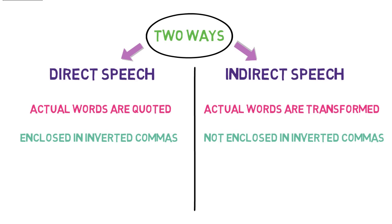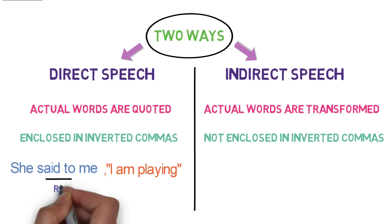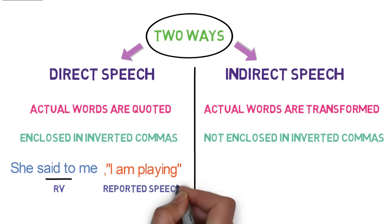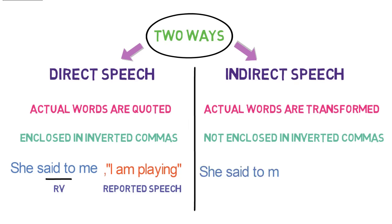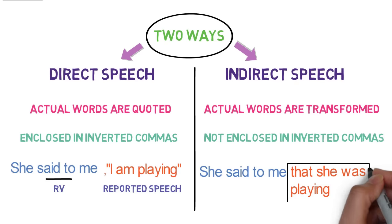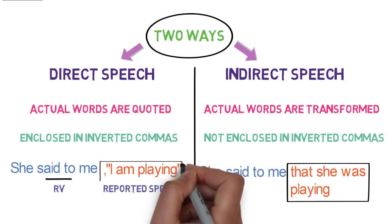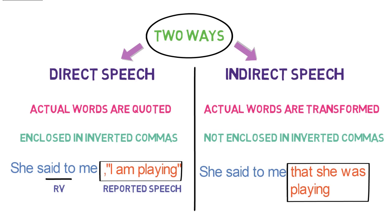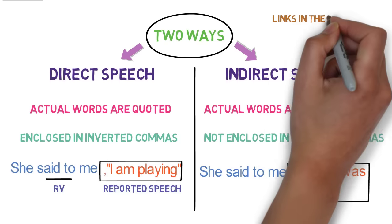Let's look at an example of direct speech. She said to me, 'I am playing.' Here, 'said to' is the reporting verb and 'I am playing' is the reported speech. In the indirect speech, the sentence will be written like this: She said to me that she was playing. The second sentence is the transformed version of the first. This has all been discussed in the previous video related to direct-indirect speech — please check that video if you haven't already, or need a revision. Links are provided in the description.